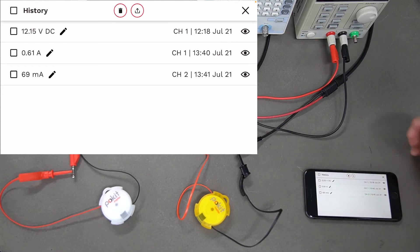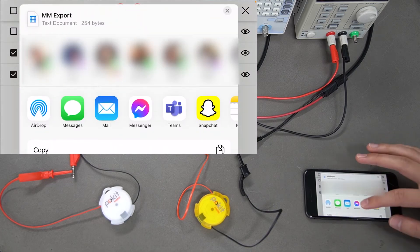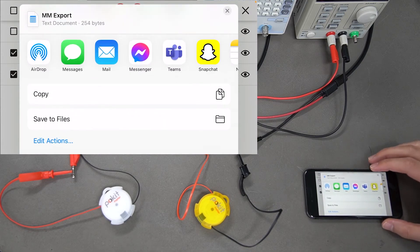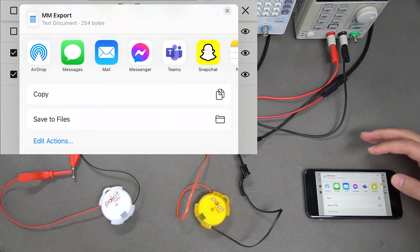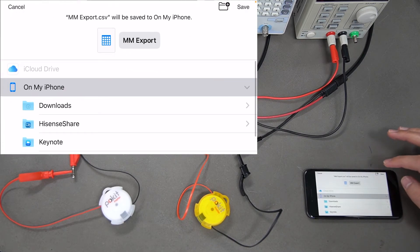If you go to the history tab, with these ones you can export them. You can select these two and send them wherever you like. You can email them, message them, and save them to your phone, which I might do here.